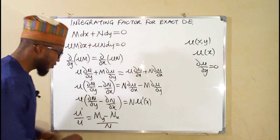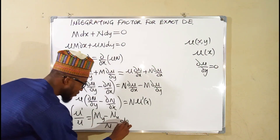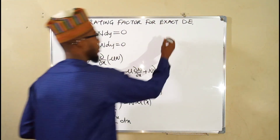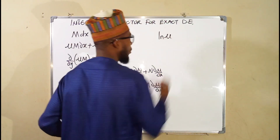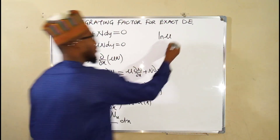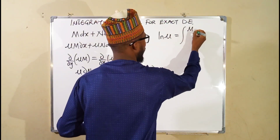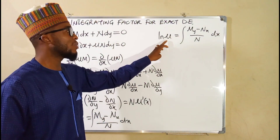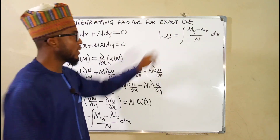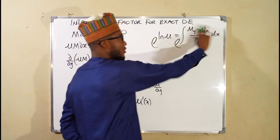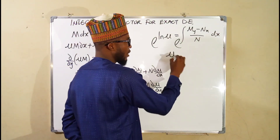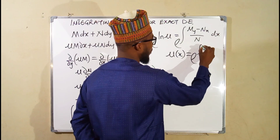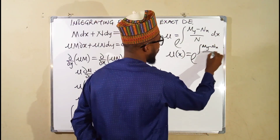Now we integrate both sides with respect to x. Integrating the left-hand side gives us the natural log of mu in absolute form, but we pretend mu is positive. This equals the integral of (M subscript y minus N subscript x) over N, dx. Since we want mu itself, we take e to both sides: e to the natural log of mu cancels, leaving mu. So our integrating factor in terms of x is: mu(x) = e to the integral of (M_y minus N_x) over N, dx.